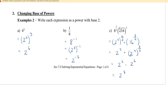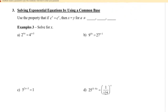Now let's solve equations using a common base. The key property is: if c to the power of x equals c to the power of y, and the bases are the same, then x must equal y. However, this property only holds when c is not 0, 1, or negative 1 — because with those values, different exponents can produce equal results.